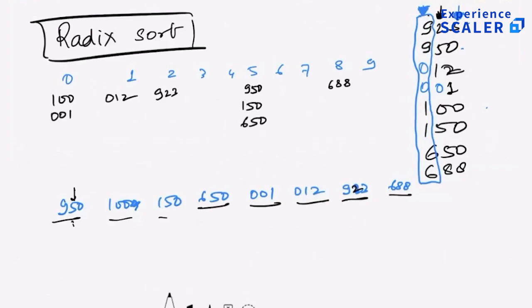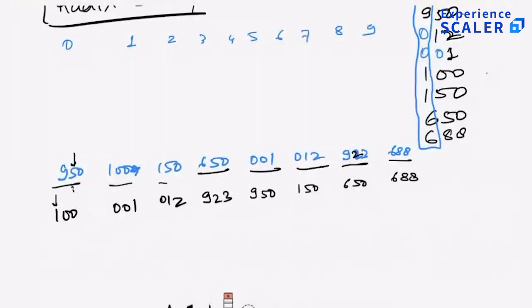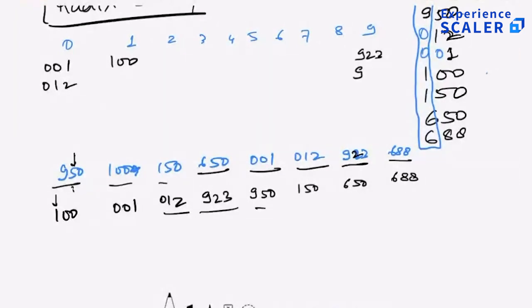Appending again ensures everything is sorted based on the last two digits. The result becomes: 100, 001, 012, 923, 950, 150, 650, 688. Now the last step is the magic step — look at the most significant bit and bucketize based on that. So 100 goes to bucket 1, 001 to bucket 0, 012 to bucket 0, 923 and 950 to bucket 9, 150 to bucket 1, 650 and 688 to bucket 6.